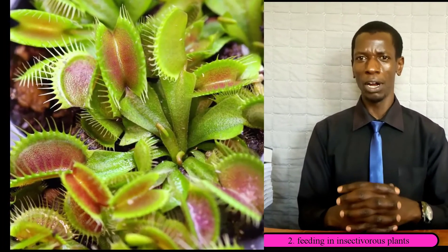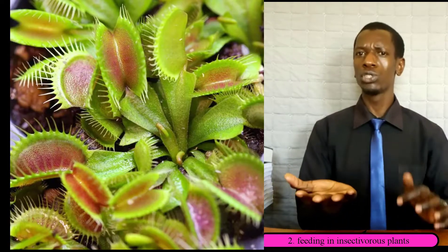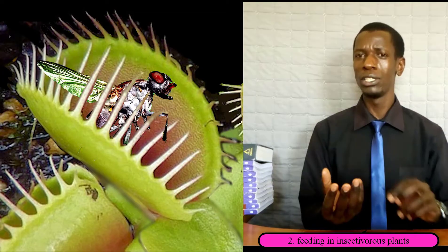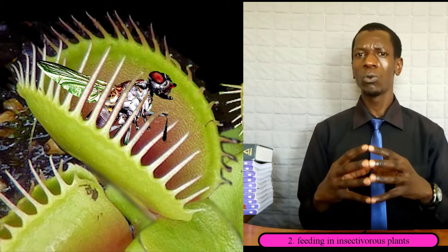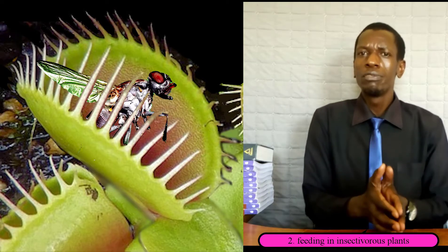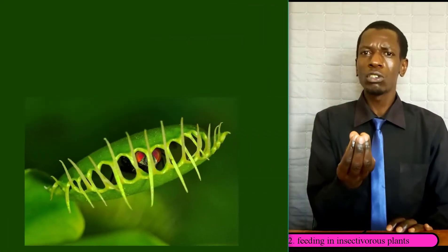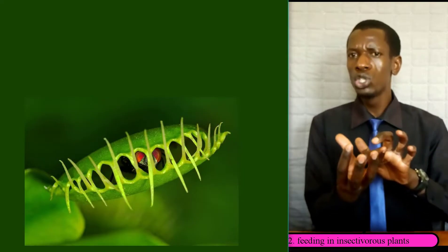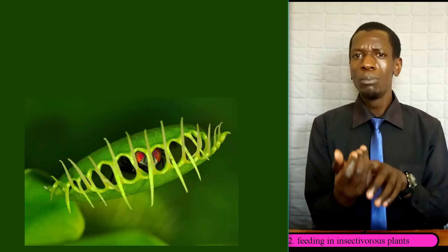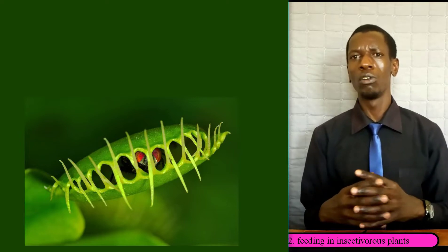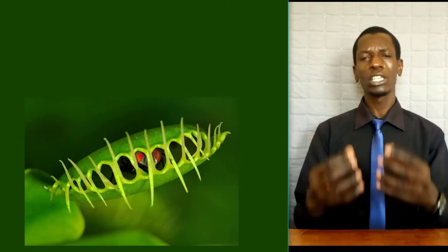In insectivorous plants such as Venus flytrap, they have some cells which are sensitive to touch. When an insect lands onto the leaf of a Venus flytrap plant, the process of osmosis takes place whereby water will move out of the cells found in the leaf, making the leaf fold inwards. In the process of folding, Venus flytrap holds on to that insect, squeezes it, then absorbs nutrients from the body of that organism and also absorbs water through osmosis from the body of that insect into the body of the plant.